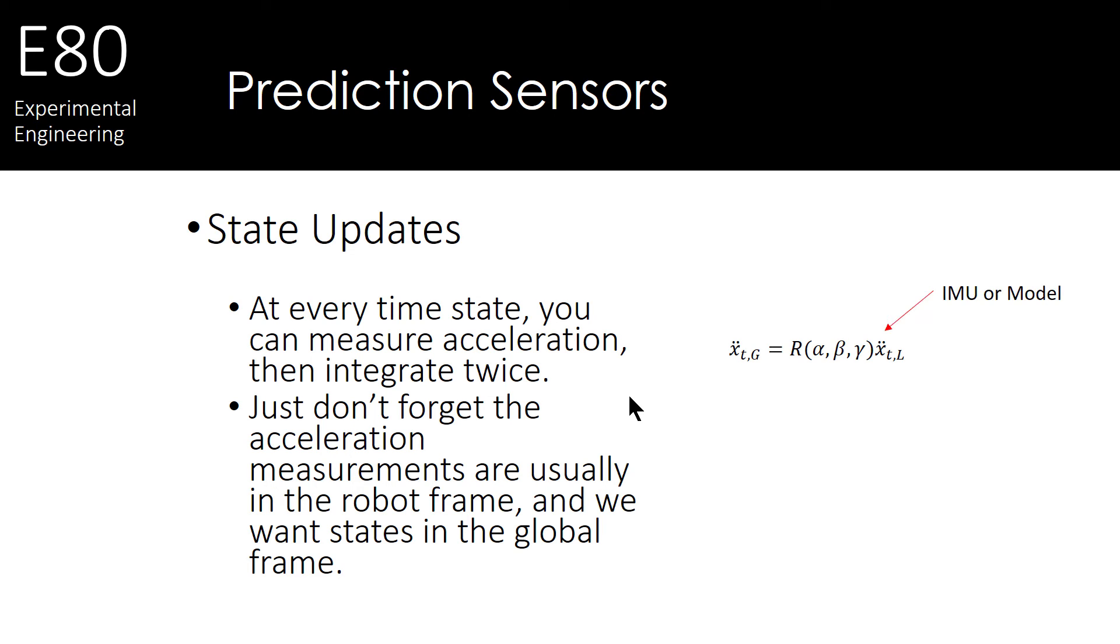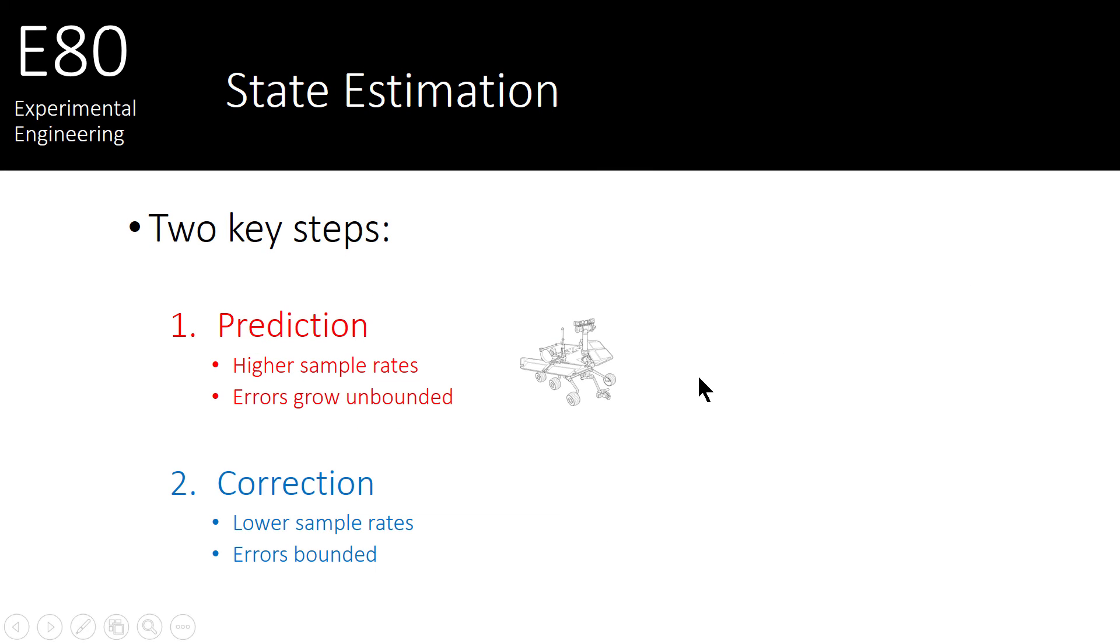So, if we take accelerations from our model, or IMU, in the local frame, we'll rotate them to get them into our global frame. And then, we do some approximations to integrate them to get velocity in the global frame, and again, to get position in the global frame. So we can figure out where the robot or rocket moved in the global world. So that was all prediction.